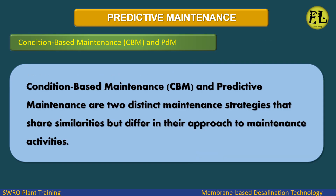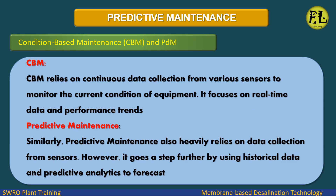Condition-based maintenance (CBM) and predictive maintenance are two distinct maintenance strategies that share similarities but differ in their approach. CBM relies on continuous data collection from various sensors to monitor the current condition of equipment, focusing on real-time data and performance trends. Similarly, predictive maintenance also heavily relies on data collection from sensors; however, it goes a step further by using historical data and predictive analytics to forecast future failures.